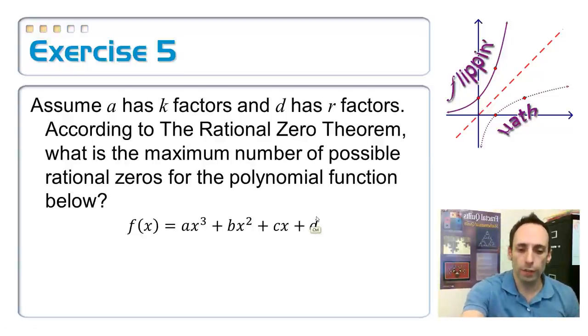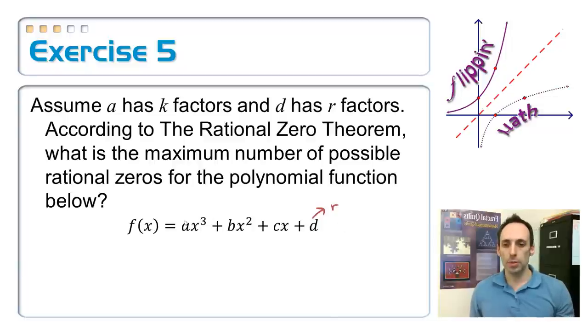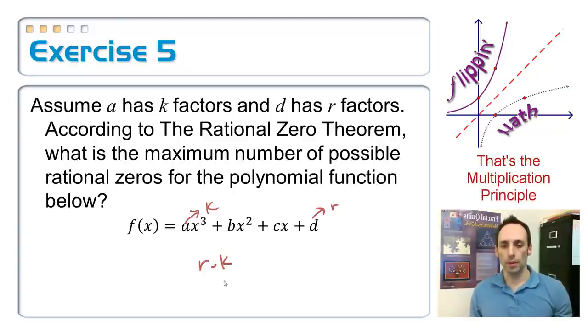Well, I'm taking all of the factors of d, which there are r of them, and I'm taking all of the factors of A, which there are k of them, and I'm dividing those out. How many possibilities are there? That is r times k. That's a lot.